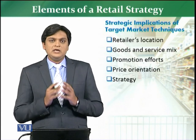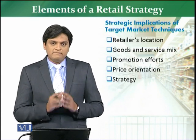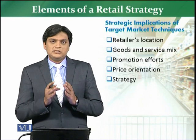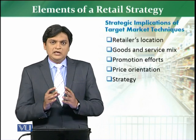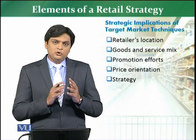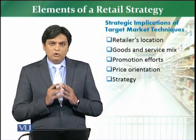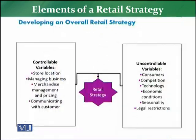About the controllable and uncontrollable variables — usko identify karne hain, understand karne hain, taake woh target market ki selection ke accordingly apni cheezein kar sake. Jab aap target market ki selection kar lete hain, in implications ko discuss kar lete hain, to retailer move karta hai overall retail strategy ke elements ke hawalay se. Is ke do elements hain: number one is controllable variables, aur phir next is uncontrollable variables.